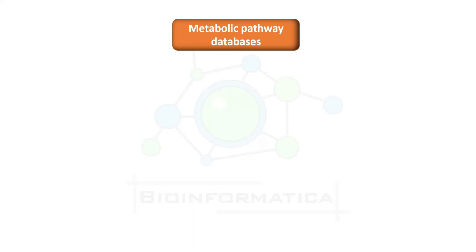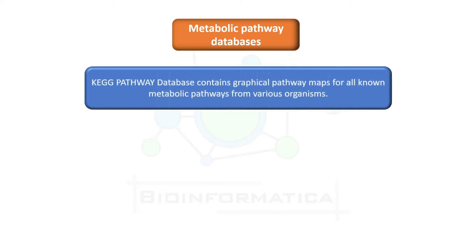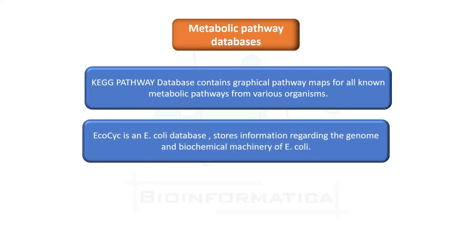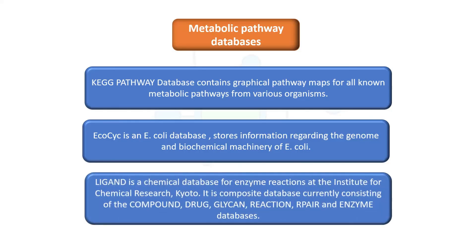The Metabolic Pathway Database includes: KEGG Pathway Database, which contains graphical pathway maps for all known metabolic pathways from various organisms; EcoCyc, an E. coli database storing information about the genome and biochemical machinery of E. coli; and Ligand, a chemical database for enzyme reactions at the Institute for Chemical Research. Ligand is a composite database consisting of compound, drug, glycan, reactions, enzyme, and related databases.